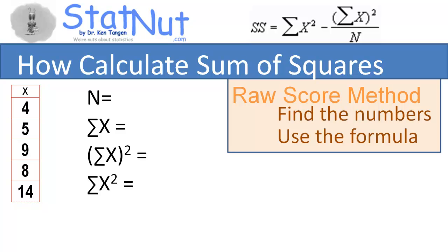First, count how many raw scores you have. Second, add up the raw scores. That is, take the sum of the X's.